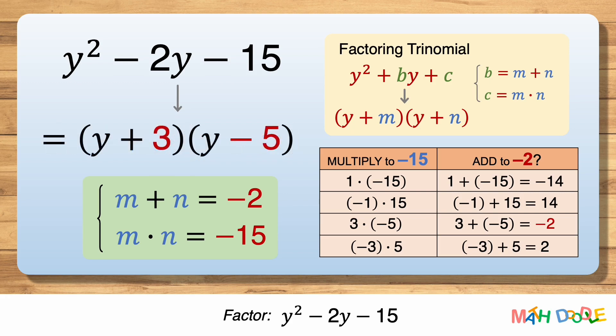This means m and n are 3 and minus 5. So the answer is (y + 3)(y - 5).